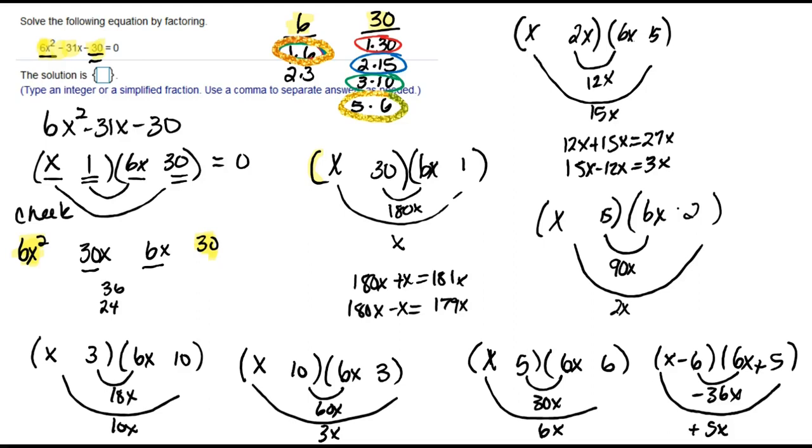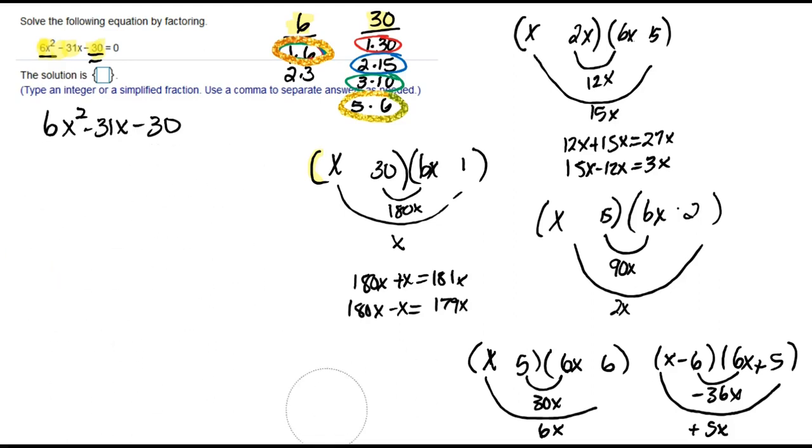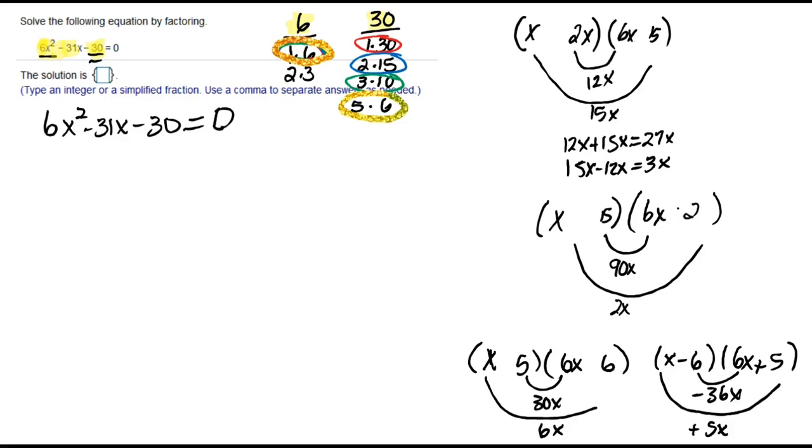So we have now figured out the factorization for 6x squared minus 31x minus 30 to be x minus 6 times 6x plus 5 equals 0.